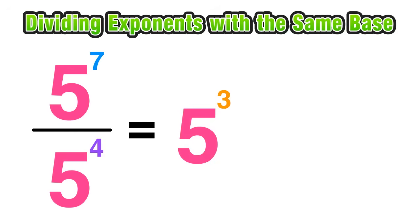So the question here is how did we use those exponents of seven and four to result in a value of three in our simplified answer? You may have noticed that seven minus four is equal to three.